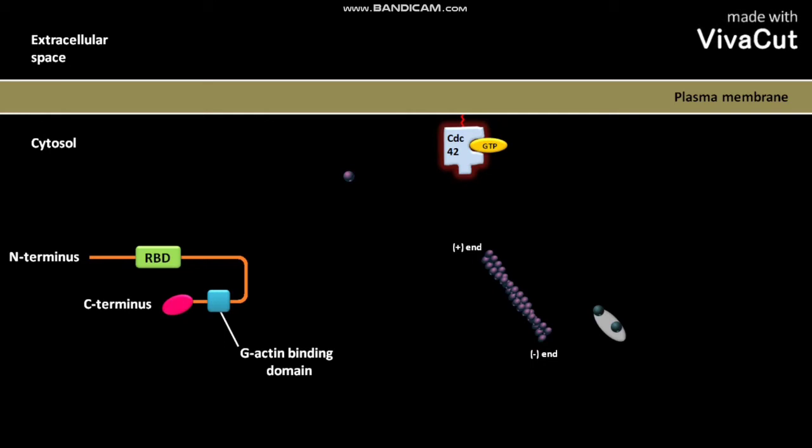The plasma membrane of the cell has bound active small G-protein called CDC42, which is bound to a GTP. The CDC42 is a RAS-related GTP binding protein and a member of the Rho family.